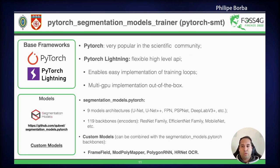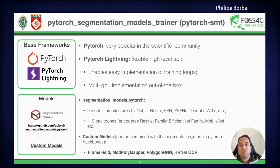We use the base frameworks of PyTorch and PyTorch Lightning. PyTorch Lightning is a very flexible and high-level API built on top of PyTorch. It enables easy implementation of training loops and has out-of-the-box multi-GPU support. SegmentationModelsPyTorch has 9 model architectures such as UNet, UNet++, FPN, PSPNet, DeepLab3+, and so on.